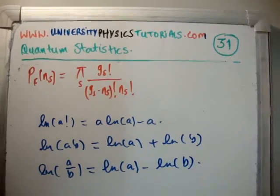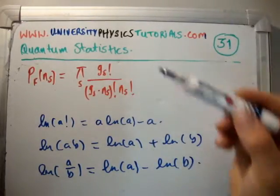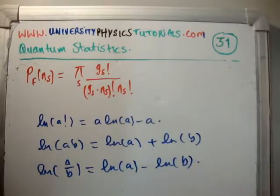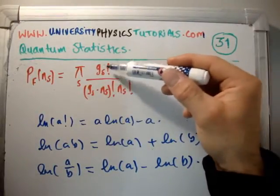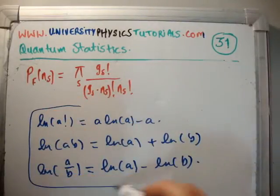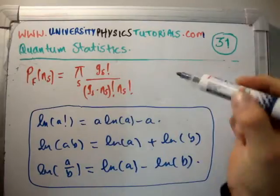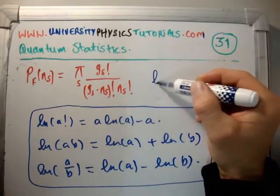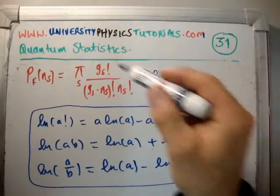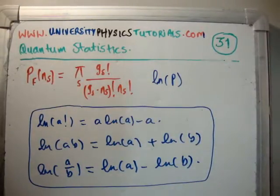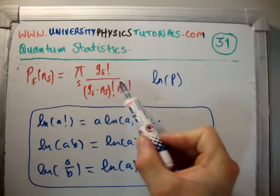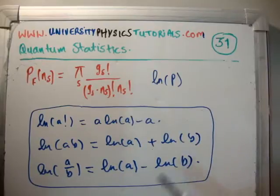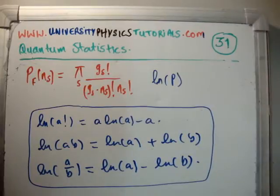Looking at what we have: this is a product, so that gives a plus b term; and this in general is a quotient, giving a minus b term. It's easier to maximize the log of the function rather than the function itself. So I'm going to take the log of the whole thing and make it look nicer. When we take the log, we get a minus b from the quotient, but the denominator also has its own product giving a plus b. Then I'll apply Stirling's approximation to all the factorials.